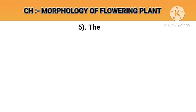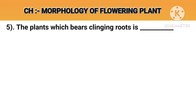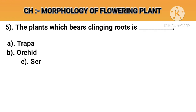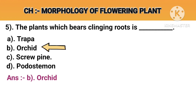Question number 5. The plant which bears clinging roots is. Option A: Trapa. Option B: Orchid. Option C: Scrupine. Option D: Podostamin. Answer B: Orchid.